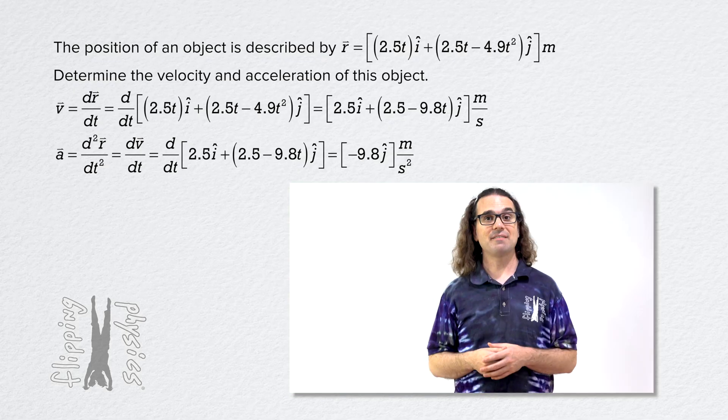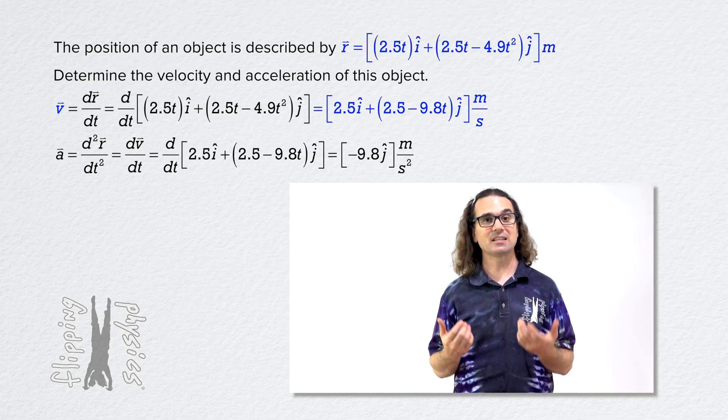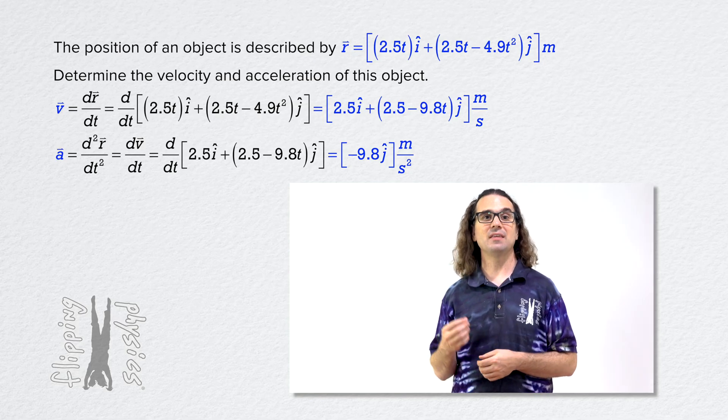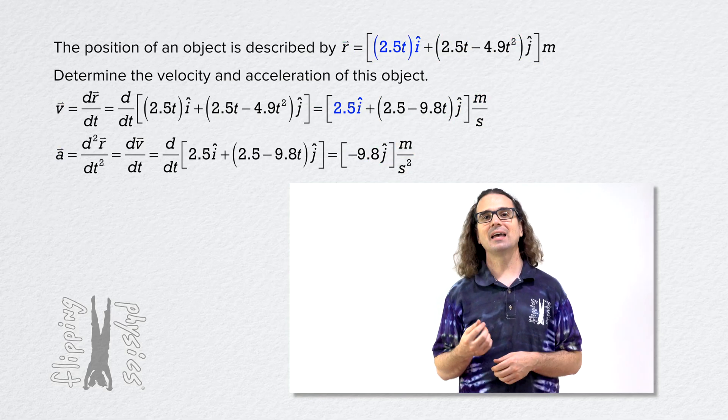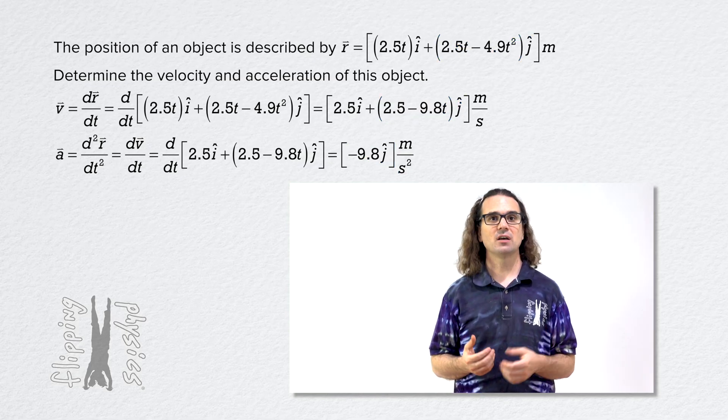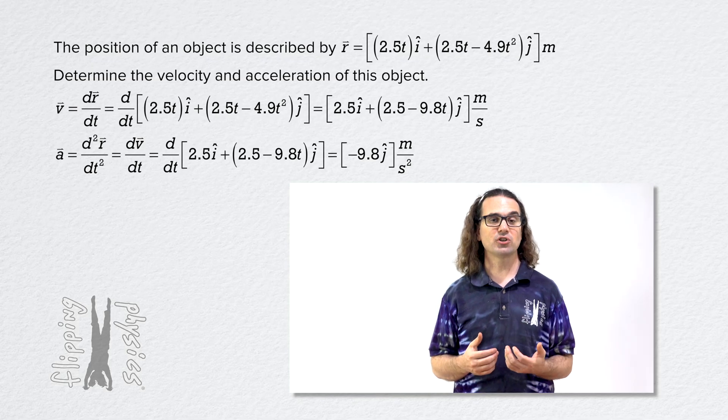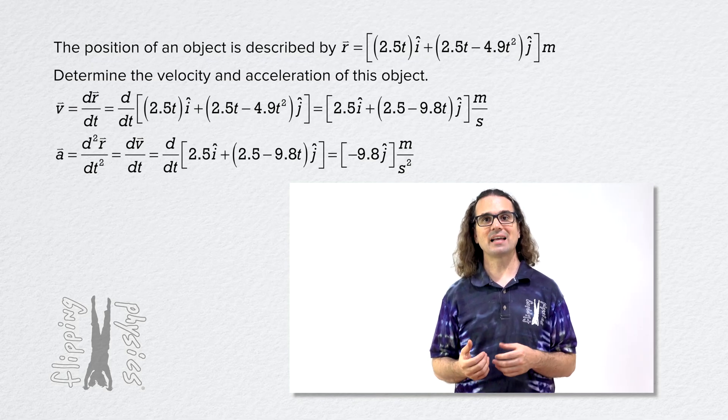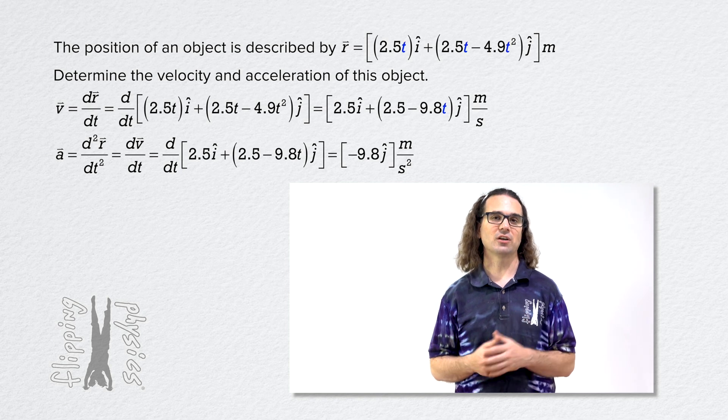Great. Now we have the position, velocity, and acceleration of the object as a function of time both in the i or x direction and j or y direction. That means we can now determine the object's position, velocity, and acceleration at any time t. All we have to do is substitute that time t into each equation.